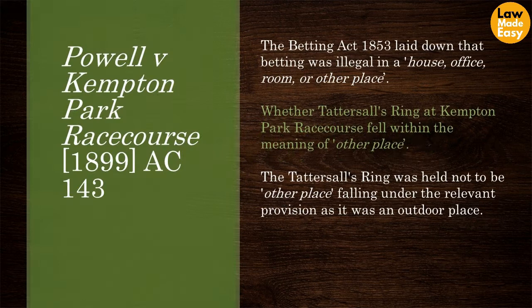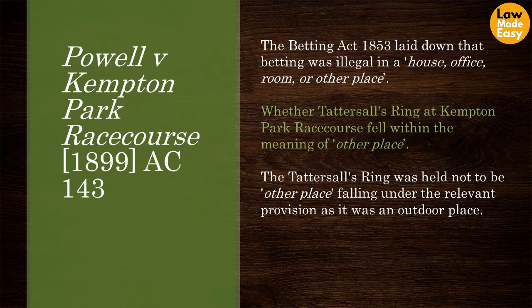In Powell v Kempton Park Racecourse, a statutory provision in the Betting Act 1853 stated that betting was illegal in 'house, office, room or other place.' The question before the House of Lords was whether Tattersall's ring at Kempton Park Racecourse fell within 'other place.' Applying ejusdem generis, the House decided that the general words had to mean an indoor place as the other words in the list all referred to inside places. Tattersall's ring was held not to be at the place falling under the relevant provision as it was an outdoor place. In Allen v Emerson, the court was asked to consider if a funfair was included in the phrase 'theatre or other place of public entertainment.' The court held that for ejusdem generis to apply there had to be at least two specific words in the list before the more general word or phrase.